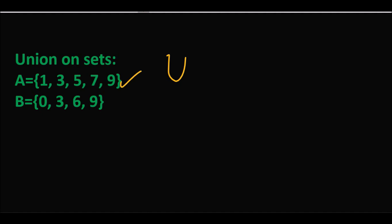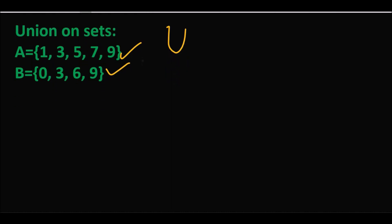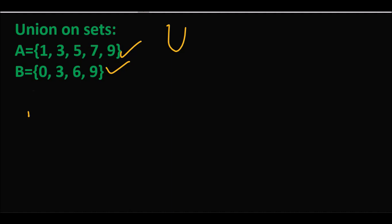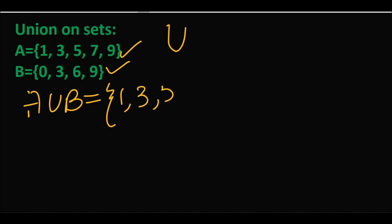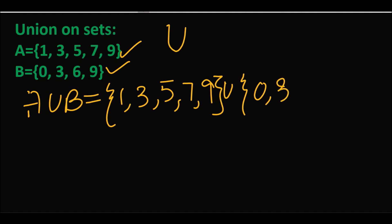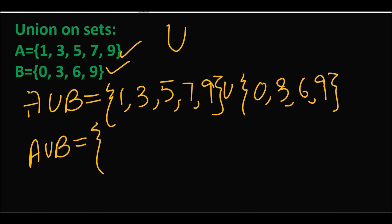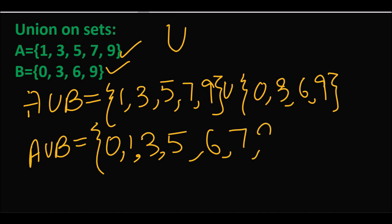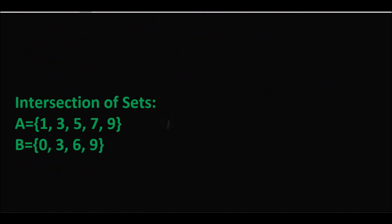For example، آپ کے سامنے دو sets موجود ہیں، set A اور set B۔ اگر ہم ان کا union لینا چاہیں تو ہم لکھیں گے A union B۔ سب سے پہلے ہم set A لکھیں گے جس میں ہیں {1, 3, 5, 7, 9}، اس کے بعد union کا sign، پھر set B جو ہے {0, 3, 6, 9}۔ تو union میں سارے elements کو sequence wise combine کر کے لکھتے ہیں: {0, 1, 3, 5, 6, 7, 9}۔